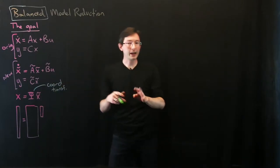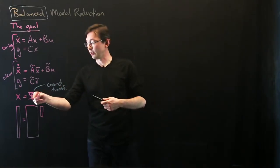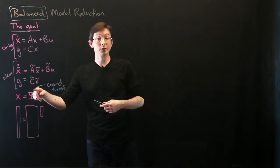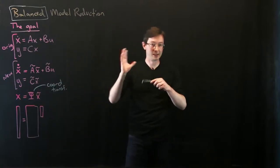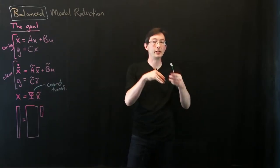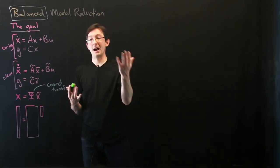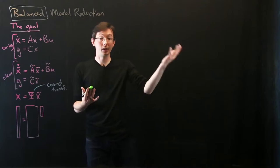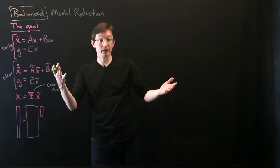Now, before we get into finding this — we're going to call this the balancing transformation. This is a coordinate transformation that balances controllability with observability.